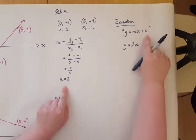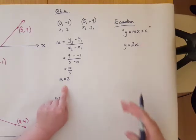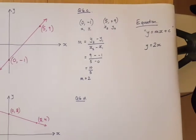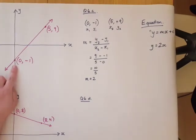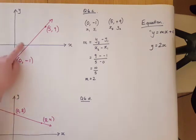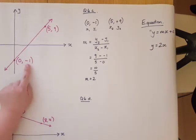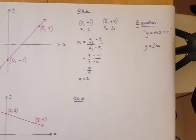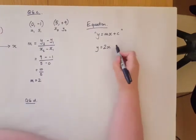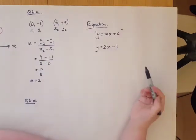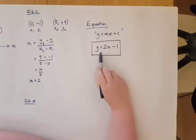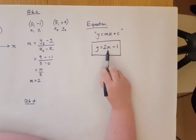The plus c we said in previous lessons represents the y-intercept. So if I look back at the graph, how convenient, we know what the y-intercept is. It cuts through at the number y equals negative 1. You can see it there, it is below the axis. So I'm going to write here minus 1. That's your final answer for the equation: y equals 2x minus 1.